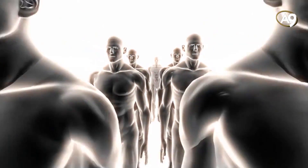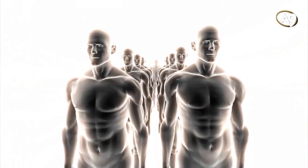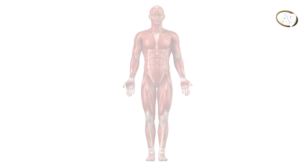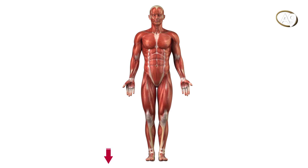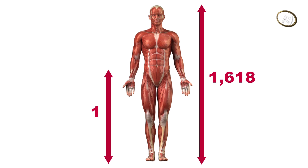The first example of the Golden Ratio in the average human body is that when the distance between the navel and the foot is taken as one unit, the height of a human being is equivalent to 1.618.